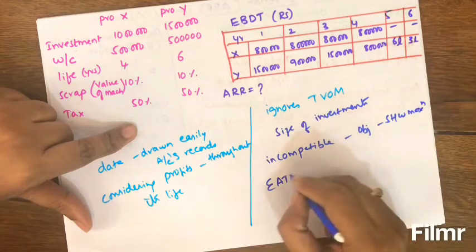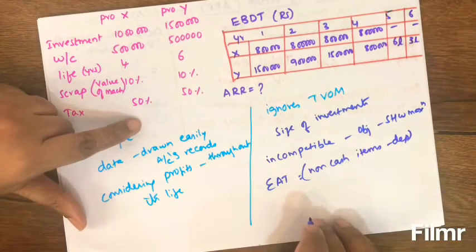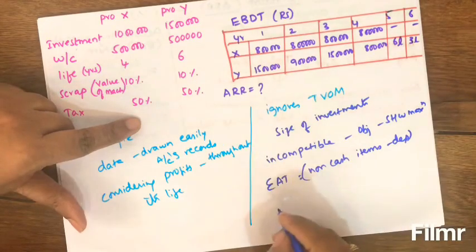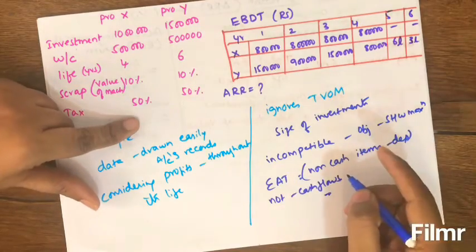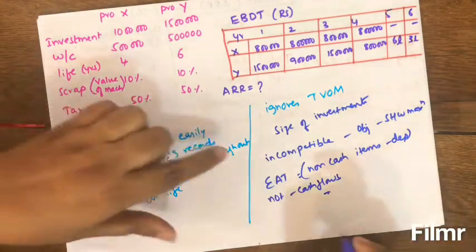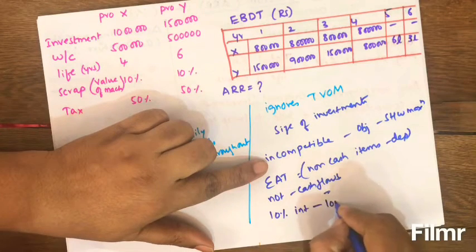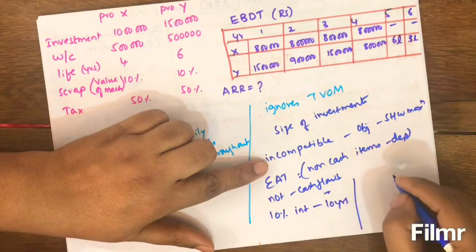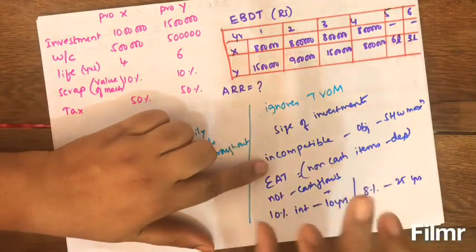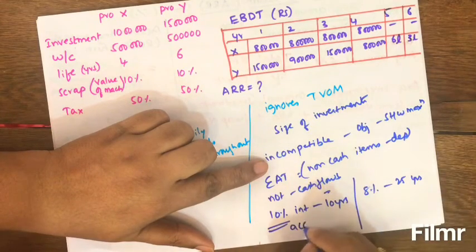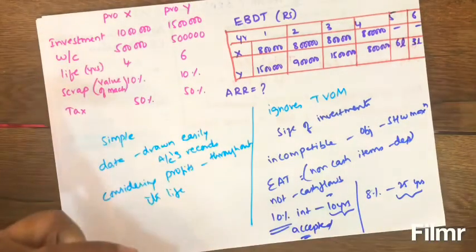Another drawback is that ARR considers earnings after taxes rather than cash flows. Earnings after taxes includes non-cash items like depreciation — depreciation is not added back, so we are not considering actual cash flows. Additionally, ARR ignores the duration over which returns are earned; for example, a project giving 10% for 10 years may be preferred over one giving 8% for 25 years, with the longer duration completely ignored.